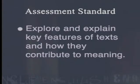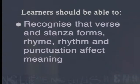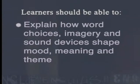The lessons in this series all address learning outcome 2, reading and viewing. It will assist learners in achieving a range of assessment standards within this outcome, including being able to explore and explain key features of texts and how they contribute to meaning. In terms of poetry, learners should be able to recognize that verse and stanza forms, rhyme, rhythm, and punctuation affect meaning, and explain how word choices, imagery, and sound devices shape mood, meaning, and theme. The learning outcome and particular assessment standards for each lesson are clearly stated at the beginning of each video lesson, and the lesson outcomes are also clearly stated in each video.